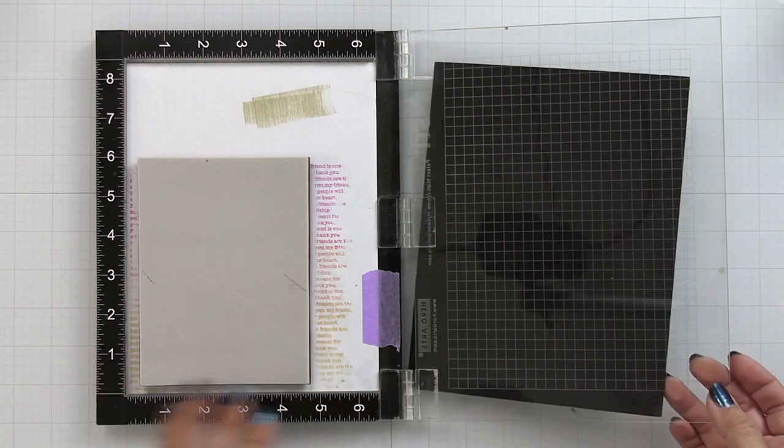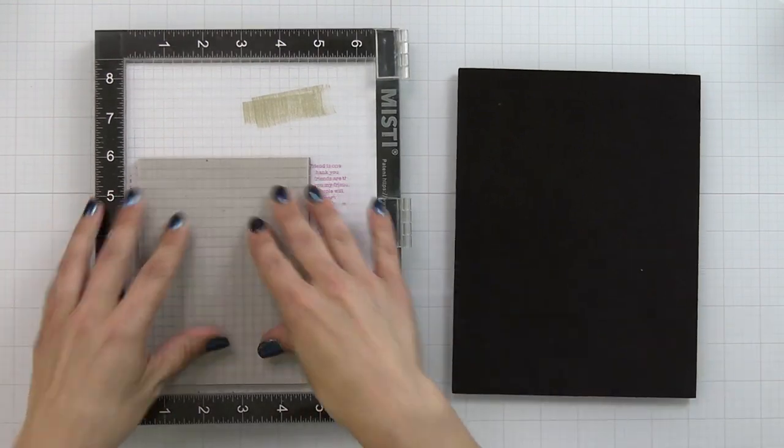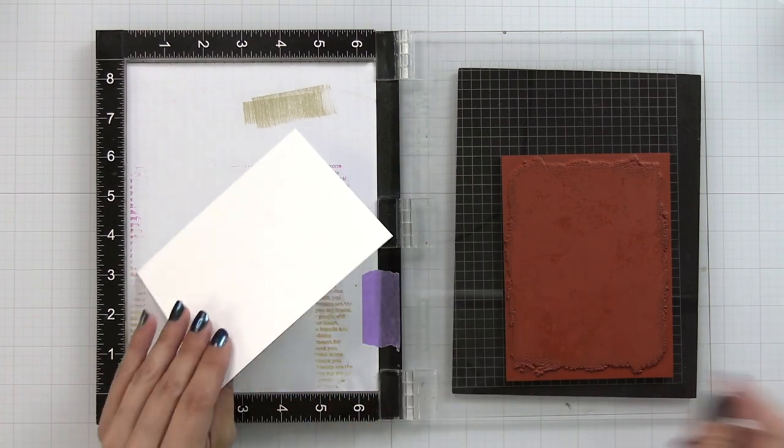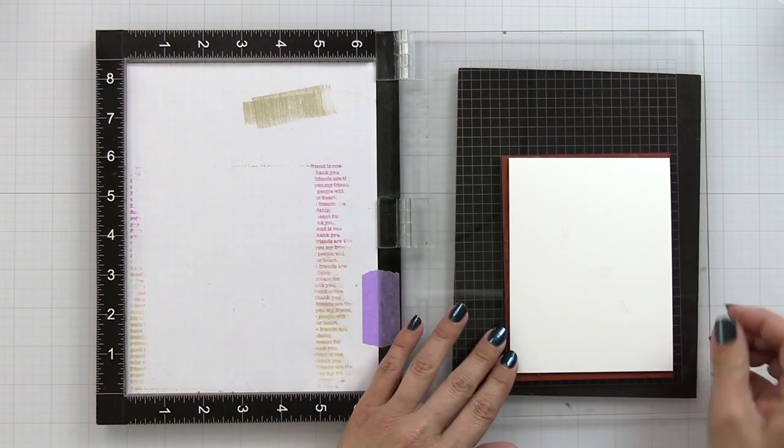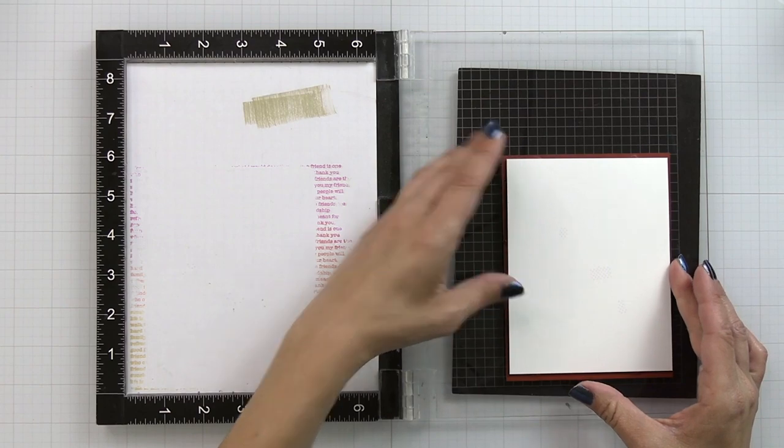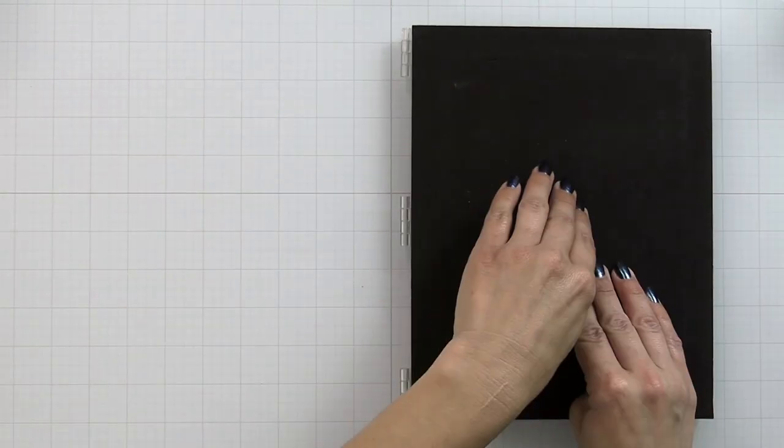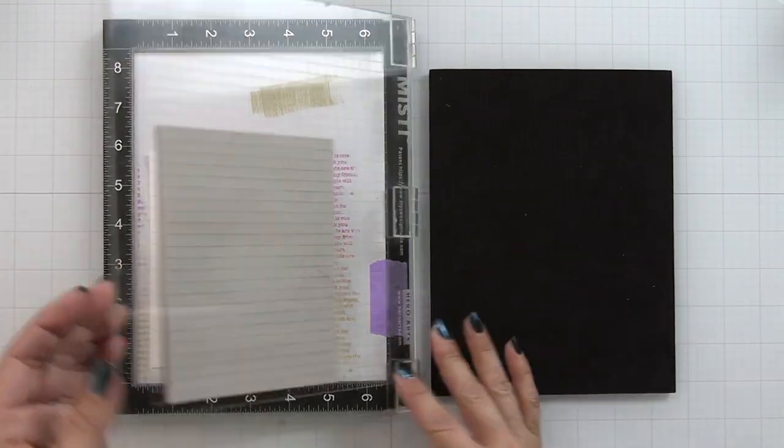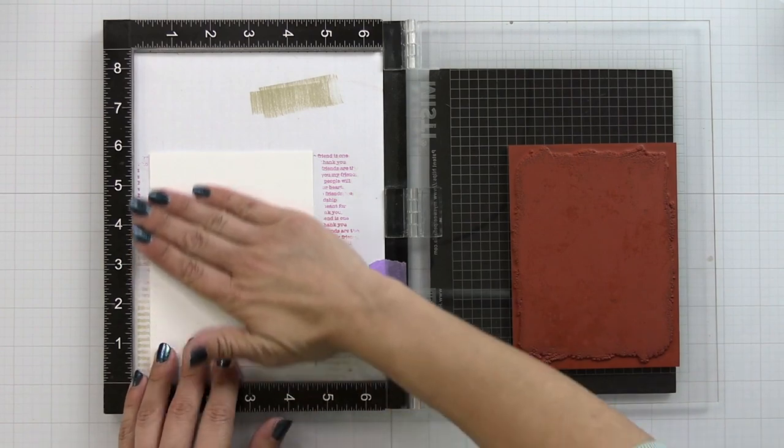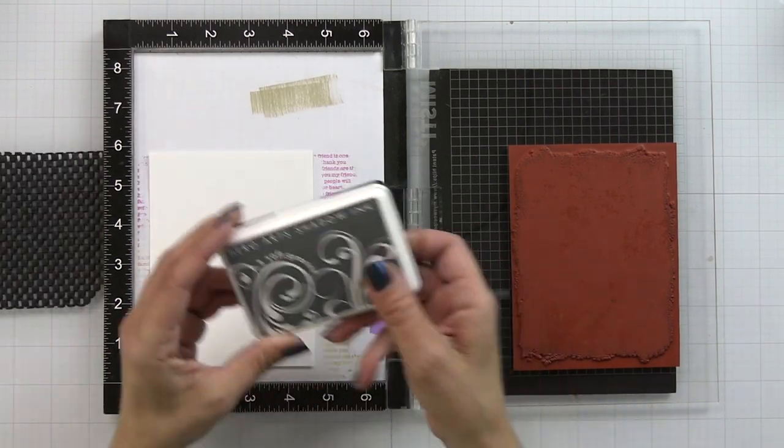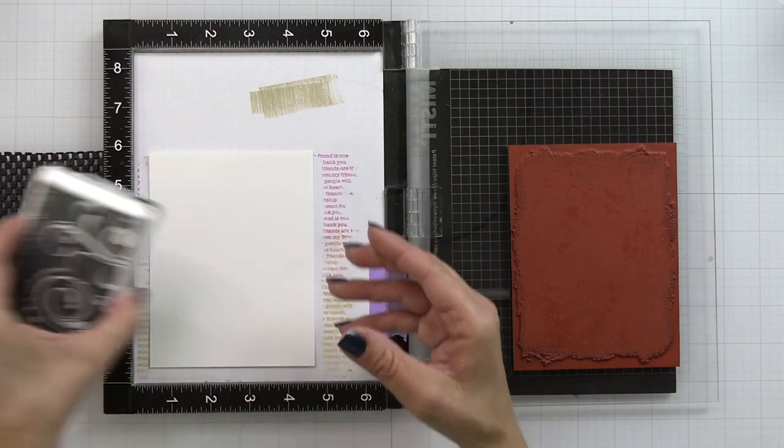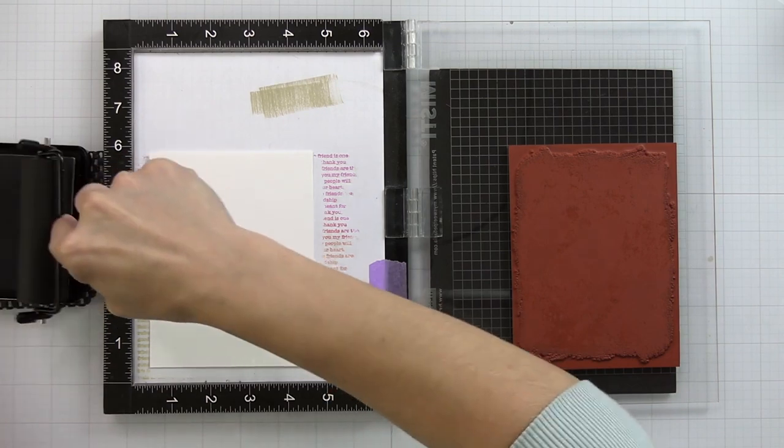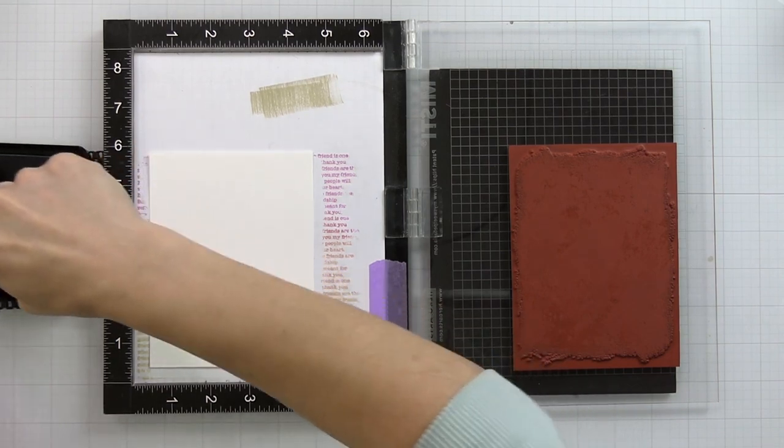I removed the foam insert from my Misti stamping tool so I could place my background cling in the Misti. I'm taking some removable adhesive and adding it to the back of my deluxe white cardstock. Then I'm lining that up over the background, making sure to get the very edges of that background stamp. Now I'm grabbing the soft granite ink. The best way I found to apply ink to this background is by using a rubber brayer.